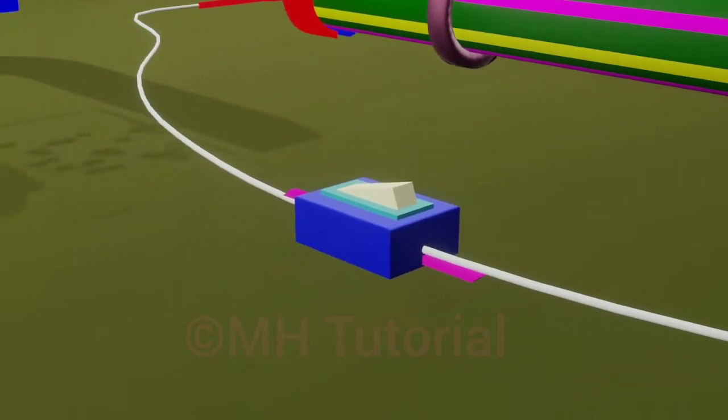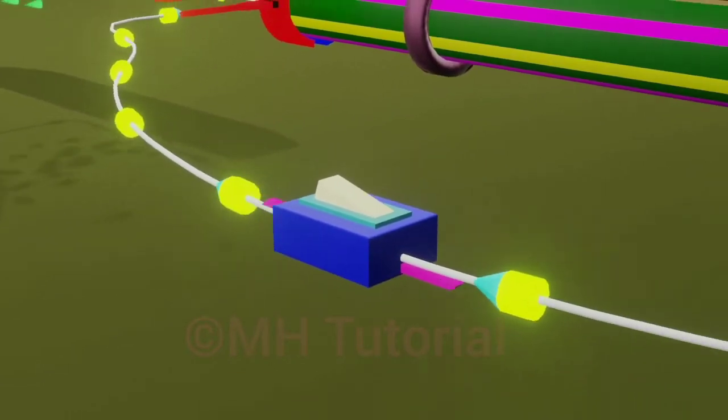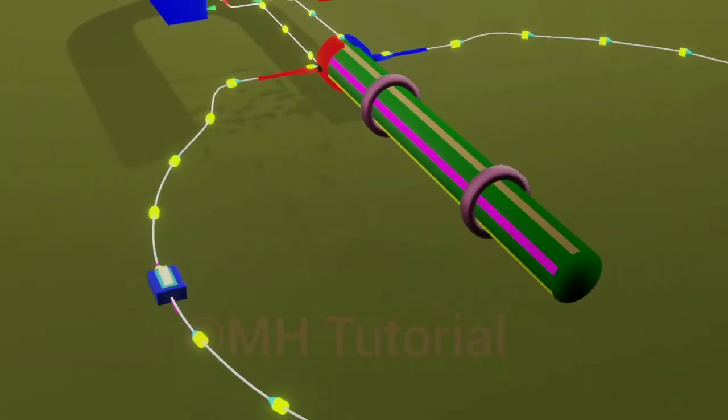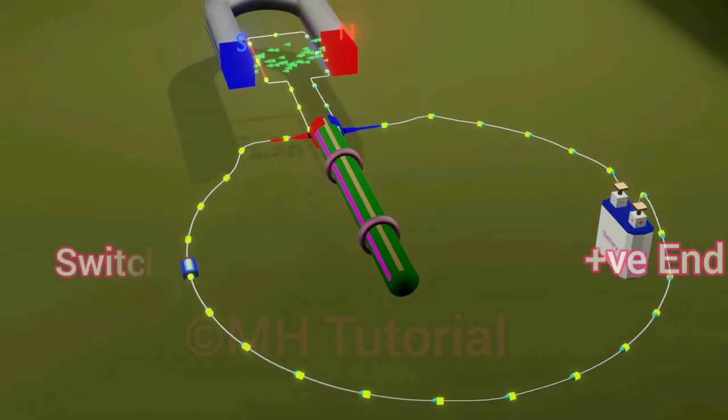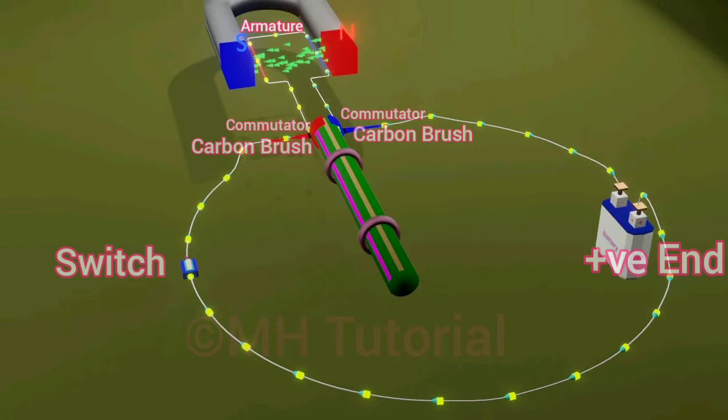Switching starts a steady current. This flow of electric current starts from the positive pole of the battery, through the switch to carbon brush, carbon brush to commutator, commutator to armature, armature to another commutator, another commutator to another carbon brush, and at last to the negative end of the battery.